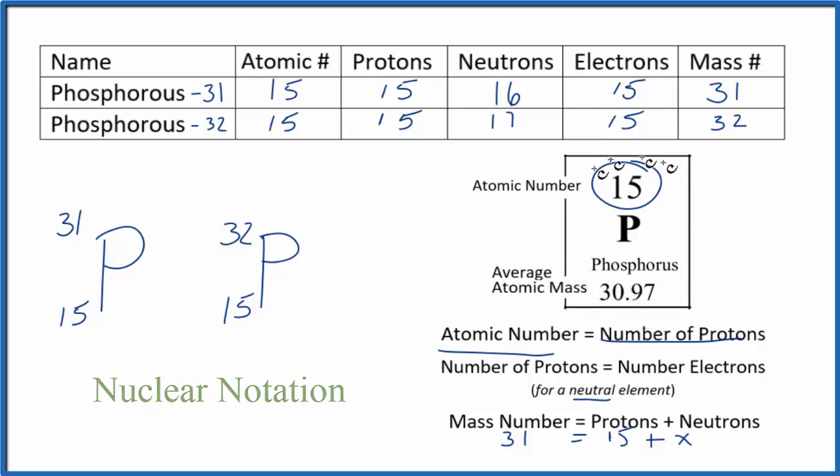You can't really just look at the periodic table and tell how many isotopes there are. We can tell that most of them will be 31, but we really can't tell how many there will be. This is Dr. B with the number of protons, neutrons, electrons, and mass number for phosphorus. Thanks for watching.